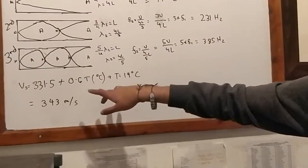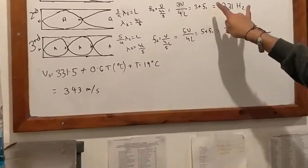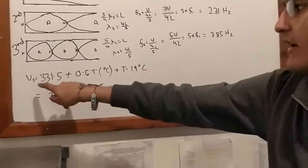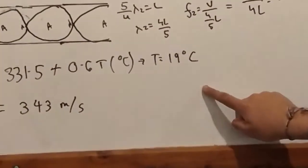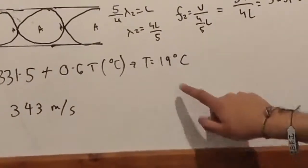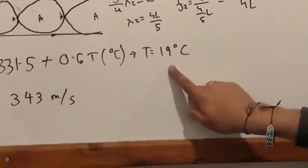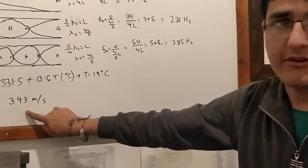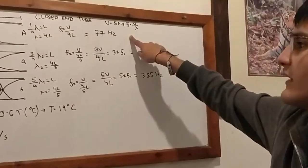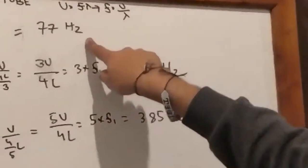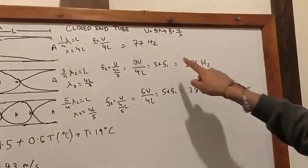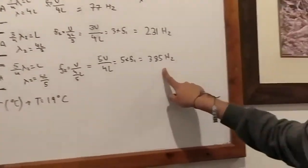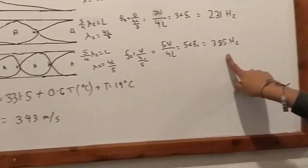In order to calculate the frequencies for our speaker system, we are going to use the comprehensive formula for the speed of sound. The temperature in the room is 19 degrees Celsius, giving us approximately 343 meters per second. Putting this into our equations, we get 77 Hz for the first harmonic, 231 Hz for the second harmonic, and 385 Hz for the third harmonic.